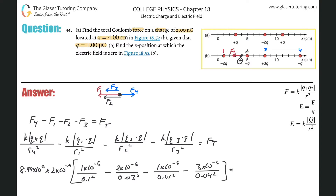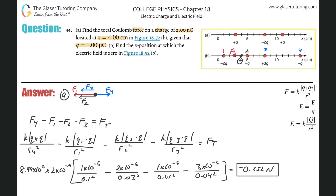Now just calculate it. So we do 8.99 times 10 to the 9th, times 2 times 10 to the minus 9th, times the quantity: 1 times 10 to the minus 6 divided by 0.1 squared, minus 2 times 10 to the minus 6 divided by 0.03 squared, minus 1 times 10 to the minus 6 divided by 0.01 squared, minus 3 times 10 to the minus 6 divided by 0.04 squared. We get a value of about negative 0.252 newtons. The negative sign means the net force is going to be pointing to the left. That was all letter A. Now let's take a look at letter B.